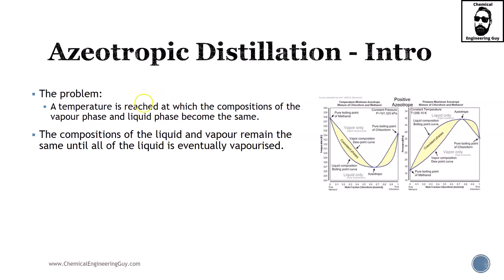So that's the problem. An azeotrope is a point at which the composition of the vapor phase and the liquid phase is exactly the same, meaning it can be assigned as a unique point in the equilibrium — the only point at which there is no separation between the dew and bubble points. The composition of the liquid and vapor phase will remain the same unless we change something.